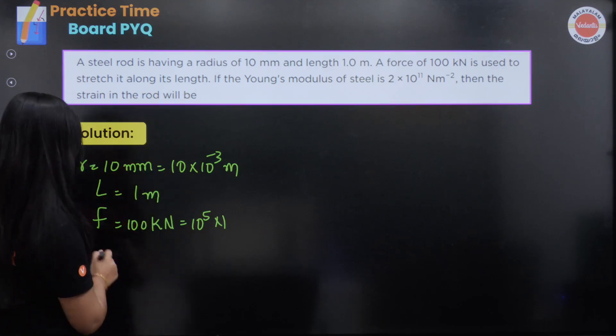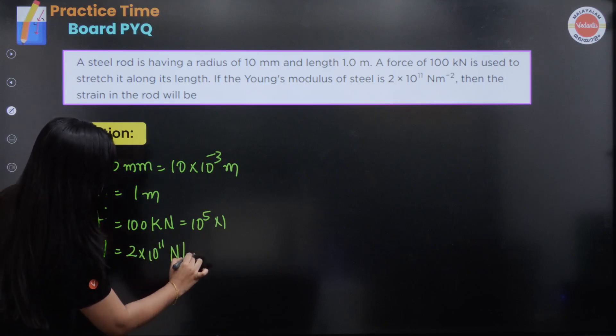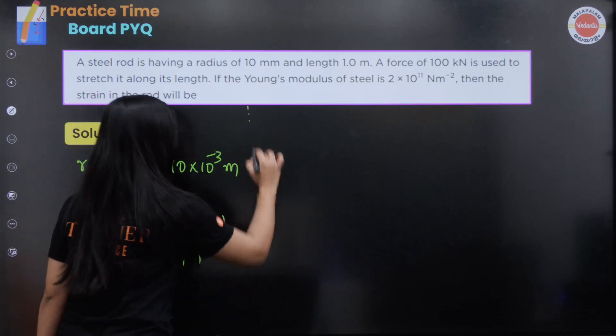And if the Young's modulus of steel is 2 into 10 to the power 11 N per meter square, then the strain in the rod will be - we will show you the strain.